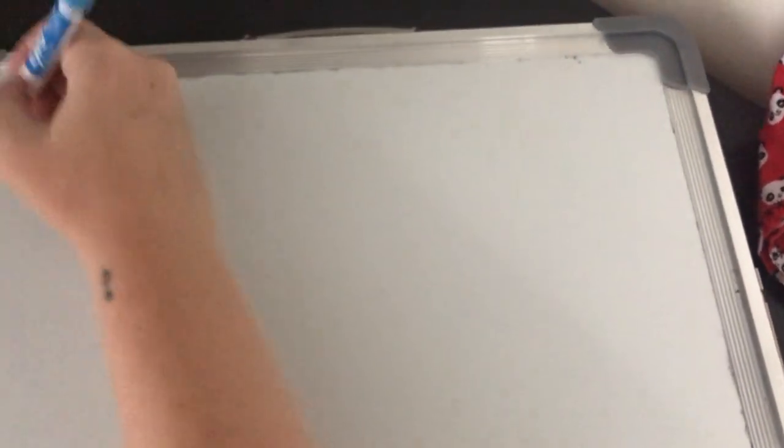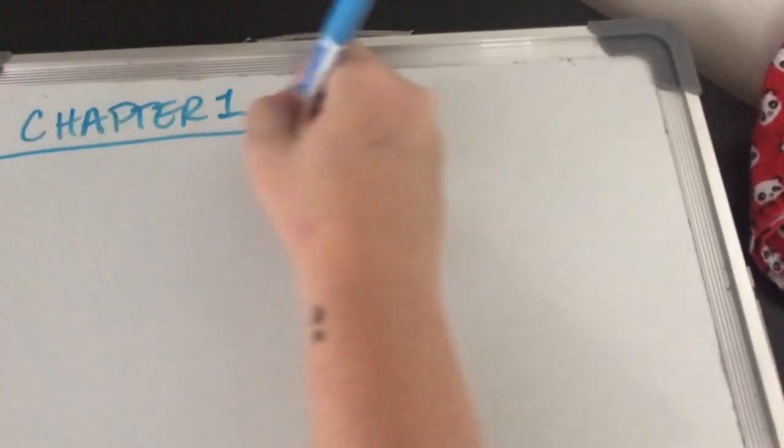All right, so finishing up chapter one. Last class we were talking about elements, we were talking about molecules, we were talking about atoms, and we were talking about compounds. So let's start with atoms. What are atoms? The smallest unit of matter that has the properties of that type of matter. Everybody comfortable with that?